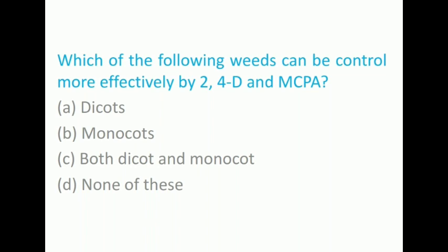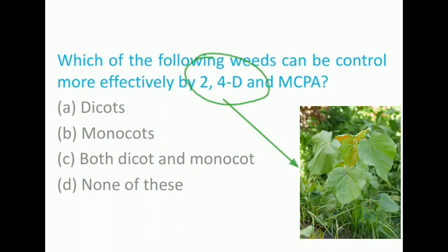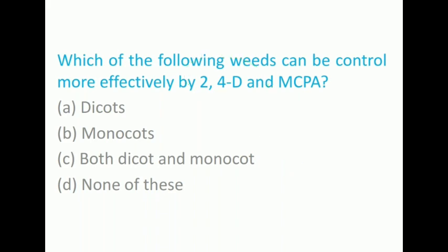The first question is: Which of the following weeds can be controlled more effectively by 2,4-D and MCPA? The options are dicots, monocots, both dicot and monocot, and none of these. The answer is dicots. Here, 2,4-D and MCPA belong to phenoxy compounds, where 2,4-D is used to control the broad leaves and MCPA against nutsedge and Canada thistle.